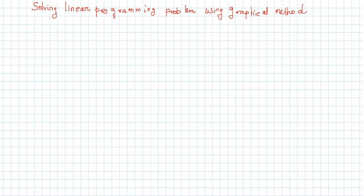Hello all. In this tutorial we are going to solve a linear programming problem using the graphical method. Normally we can solve a linear programming problem in two ways: one is the graphical method and another one is the simplex method. If the number of constraints is less than or equal to 2, we can go for the graphical method; otherwise we can go for the simplex method.